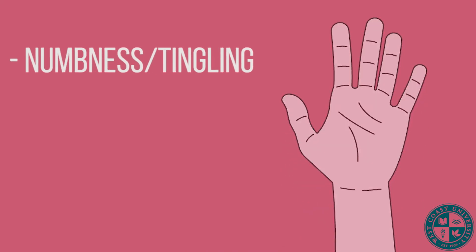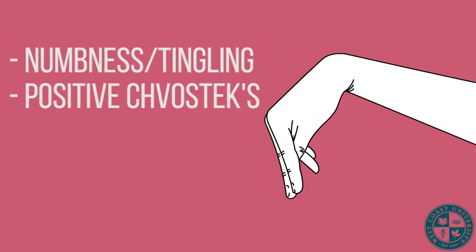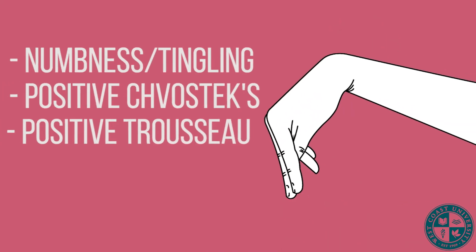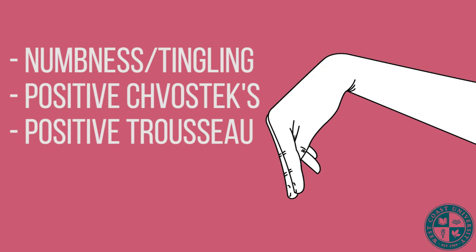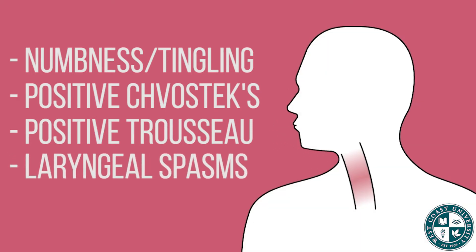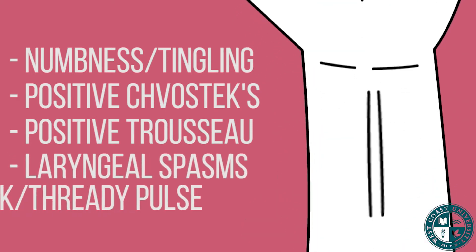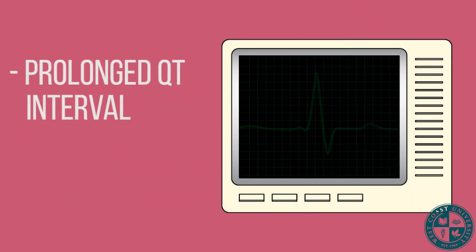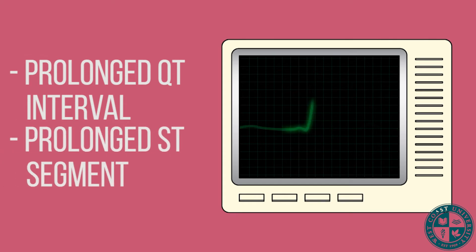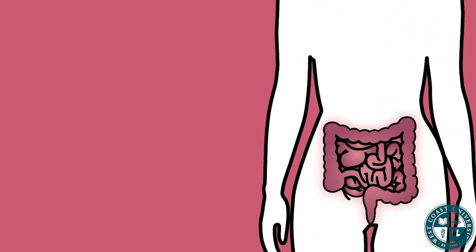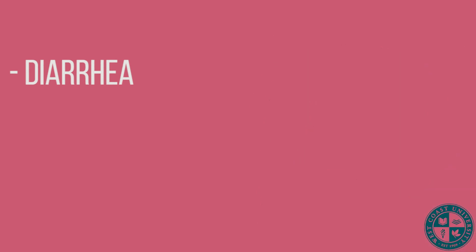What will the client look like? What are the expected findings? The client can present with numbness and tingling, a positive Chvostek sign and a positive Trousseau sign. The client can have laryngospasms and a weak and thready pulse. EKG may show a prolonged QT interval and prolonged ST segment. The client may also have diarrhea or even a seizure.